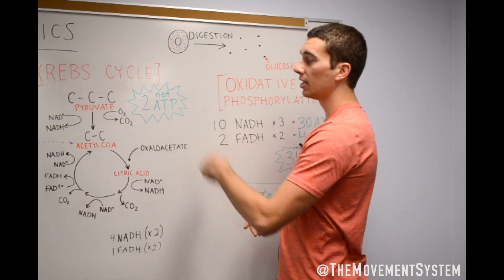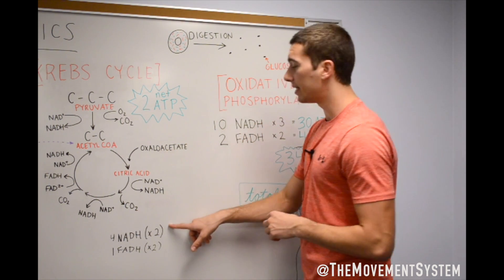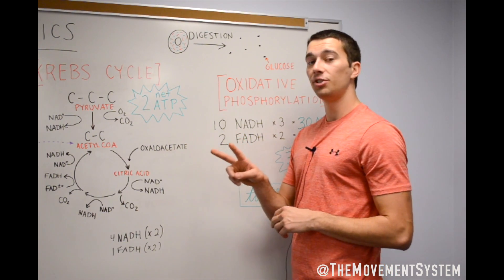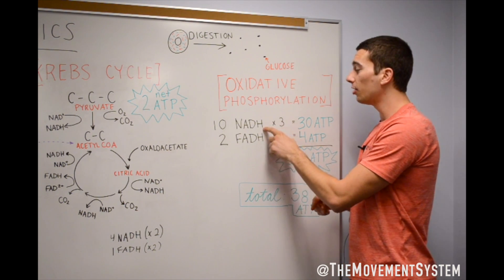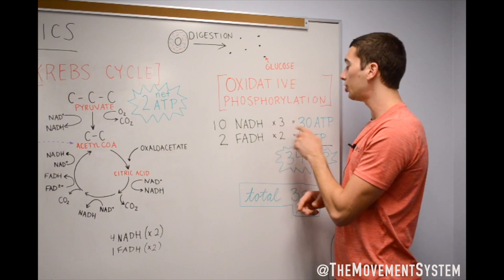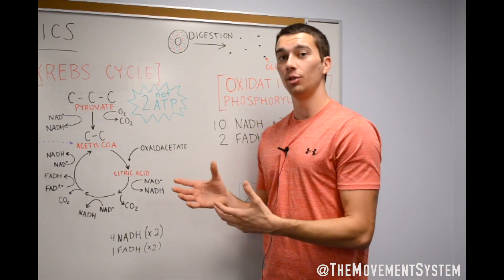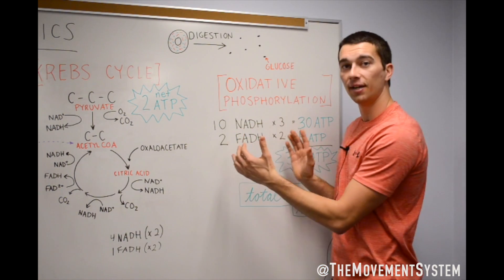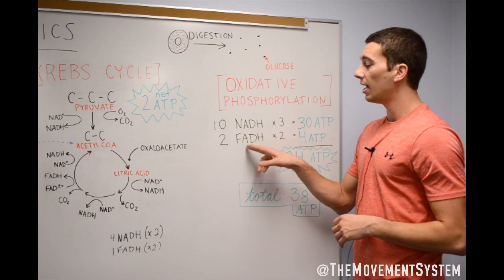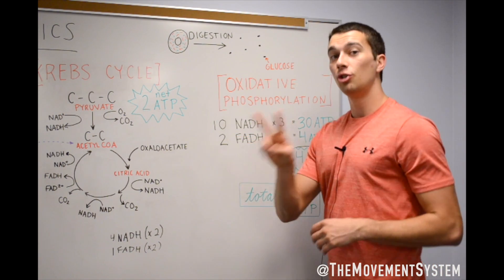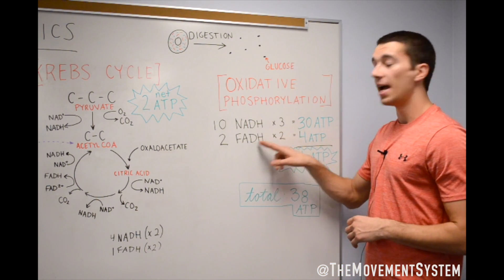Again, that was per pyruvate. So, you actually multiply that four by two, so you get eight. We also had two NADHs from glycolysis. That gives us a total of 10 NADHs. If we multiply those by three ATP per NADH, we get 30 ATP. And this is really the majority of the energy we get from the whole process, is right here in oxidative phosphorylation. That FADH is going to give us two ATP. And again, we had one of those per cycle. You had two cycles because you had two pyruvates. So, that would get us two FADHs and that would get us four ATP.